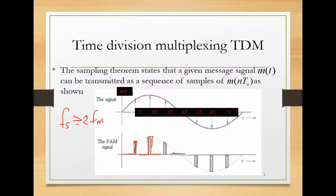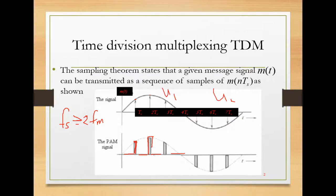One can think: why don't we utilize these empty time durations to send more data or to send the message of another user? The first signal belongs to user number one — what if we have user number two? Can't we utilize these empty time durations to send other users' signals? Of course we can. This is the basic principle of time division multiplexing: taking samples of different signals corresponding to different users and fitting them into the same time duration between consecutive pulses.